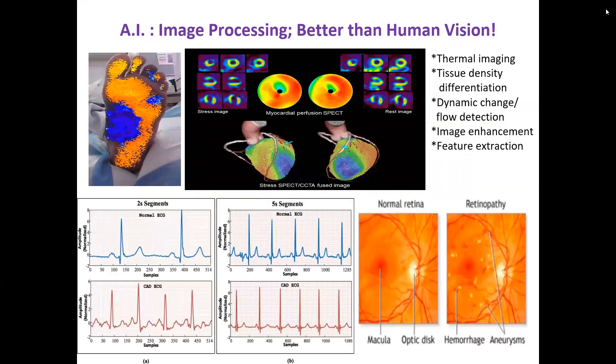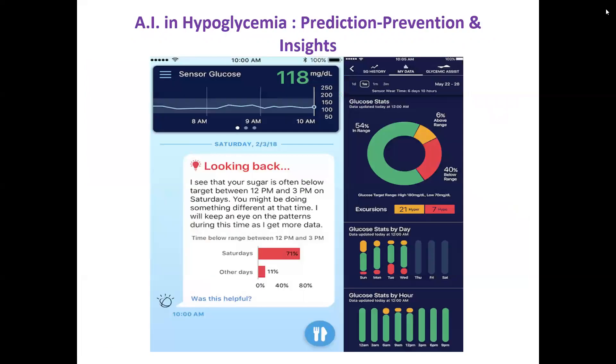We are also using image processing for diabetic foot problems. For ECG interpretation, even primary care physicians in distant clinics no longer need telemedicine — with AI, ECGs are automatically interpreted. The AI can also give continuous glucose monitoring data for hypoglycemia prediction, prevention, and insights into whether a patient is heading toward hypoglycemia or hyperglycemia.